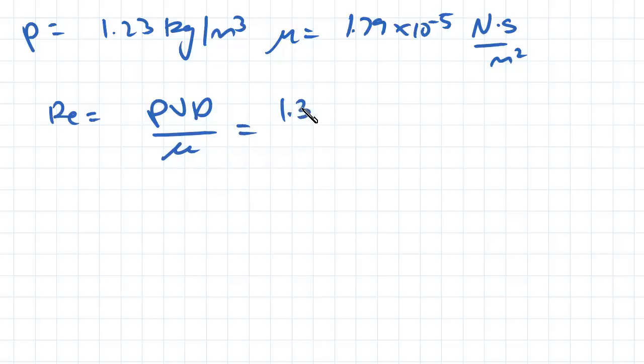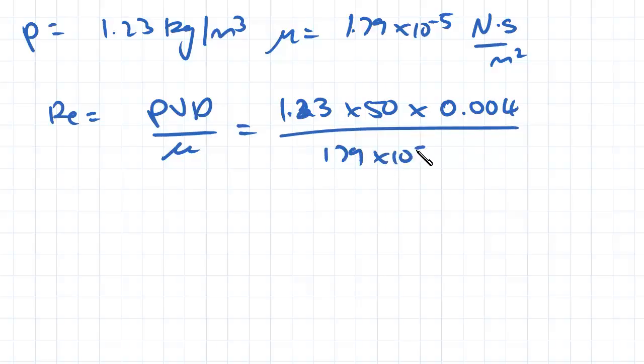So if I sub in all our values, 1.23 multiplied by 50 meters a second for our velocity multiplied by our diameter which is 0.004 meters keeping our units consistent and then divide by 1.79 times 10 to the negative 5.